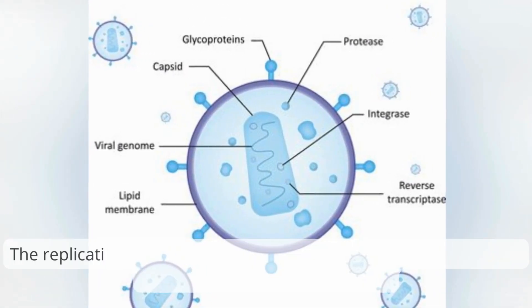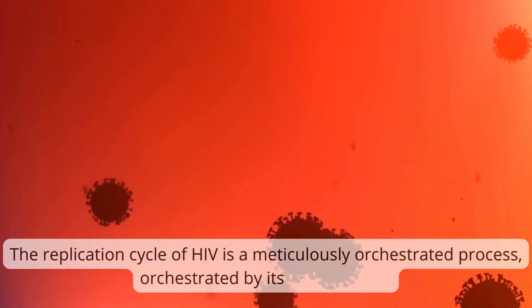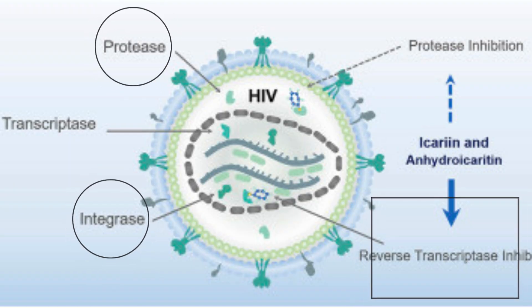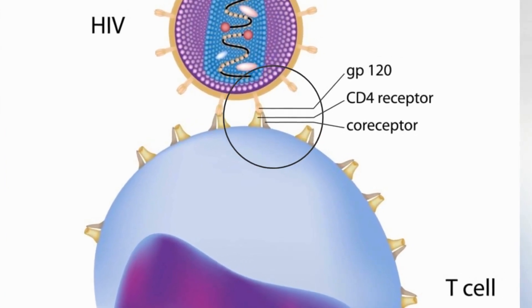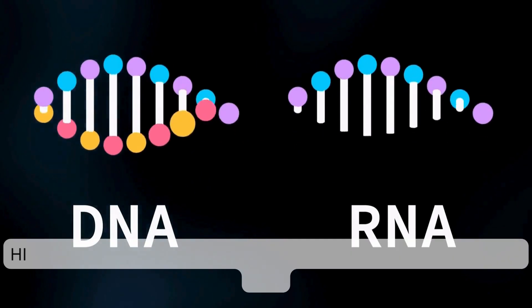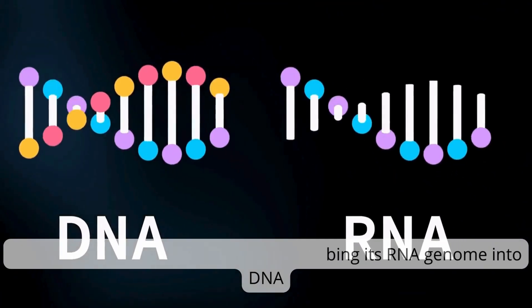The replication cycle of HIV is a meticulously orchestrated process, organized by its key enzymes: reverse transcriptase, integrase, and protease. Upon entry into a host cell, typically CD4+ T lymphocytes or macrophages, HIV begins its journey by reverse transcribing its RNA genome into DNA.